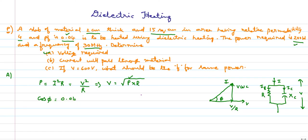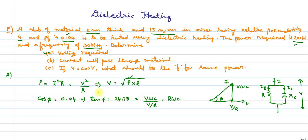Since cos φ = 0.04, we convert to tan φ = 24.78. From the phasor diagram, tan φ = opposite/adjacent = (V·ω·C) / (V/R) = R·ω·C. So tan φ = R·ω·C, where ω = 2πf and f is the frequency given as 30 MHz.